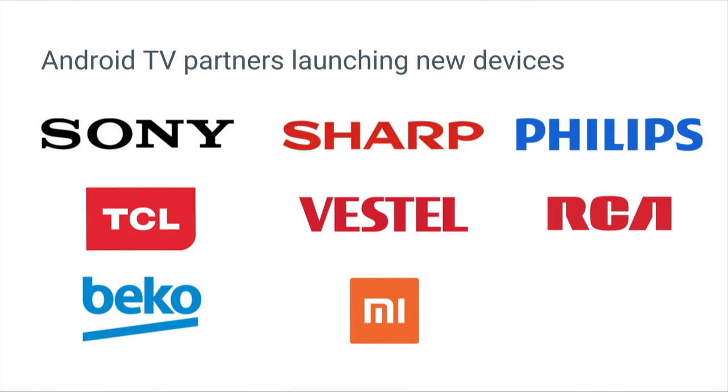Talking about what happened in the last year with Android TV — the ecosystem is growing with more and more partners. It's a great story to see partners who launched in the first year now recommitting with new models: Sony, Sharp, Philips bringing new models to market. And it's great to see new arrivals in new regions like TCL, Vestel, RCA, and Beko launching devices on Android TV over the coming weeks and months.